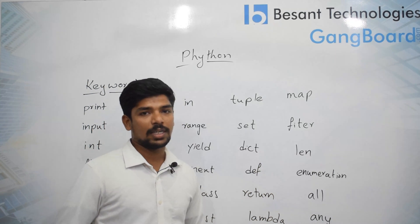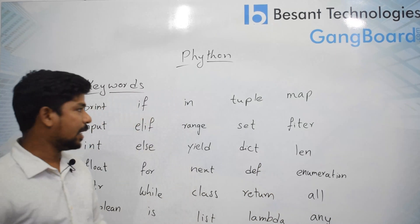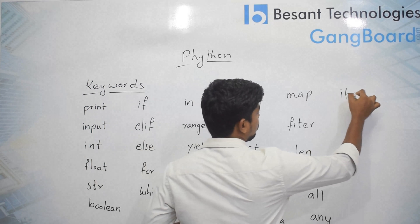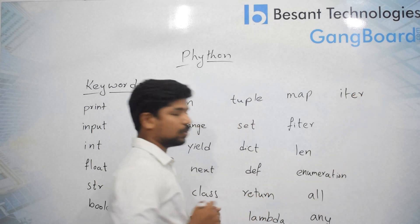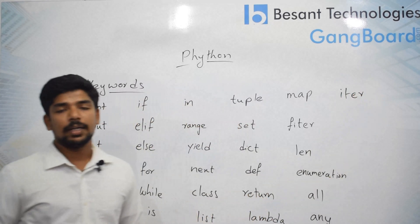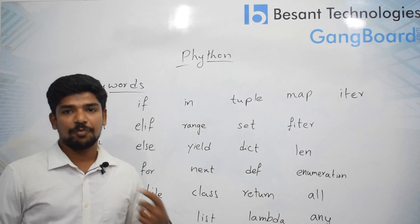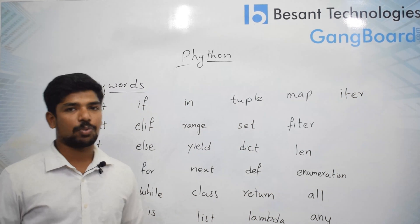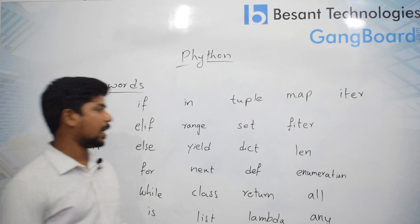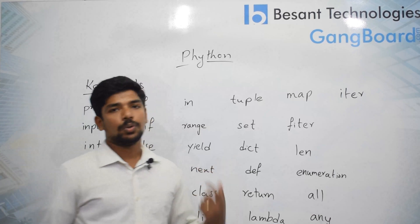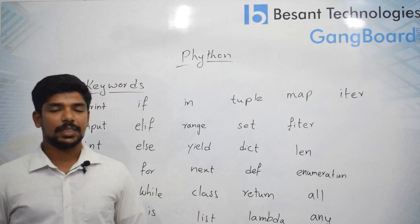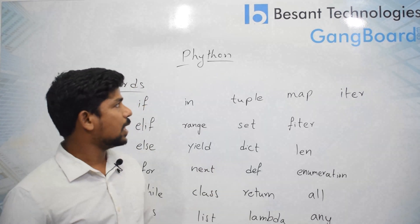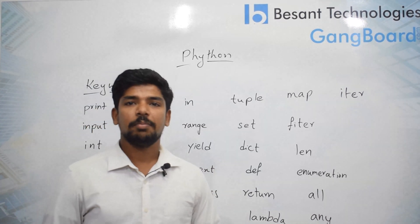One such keyword is 'iter', which is used for item iterations one by one — essentially a step-by-step process. We can use 'iter' and 'next' as a combination to go step by step. To learn more, please come and join with some technologies.